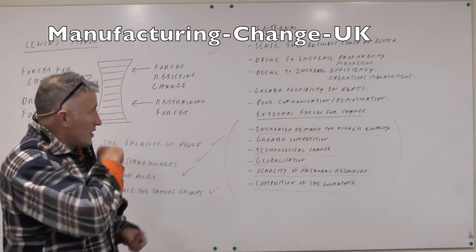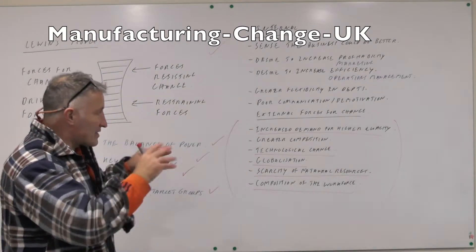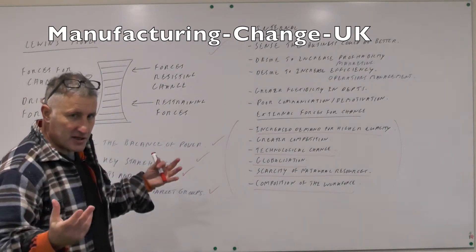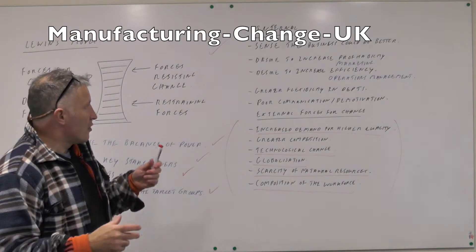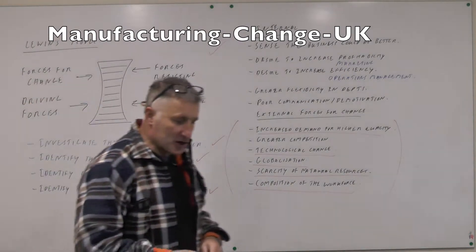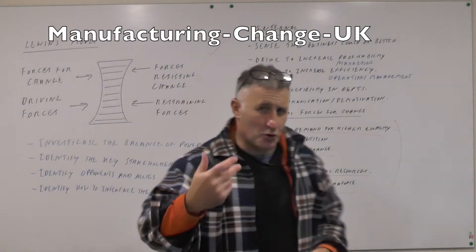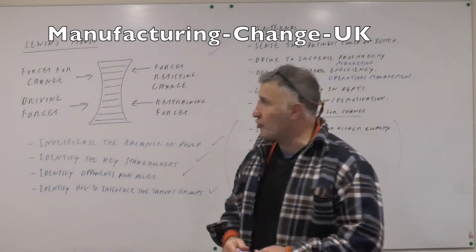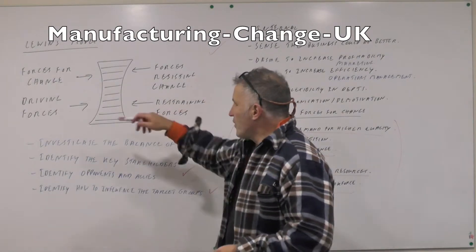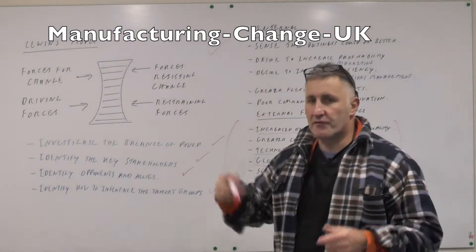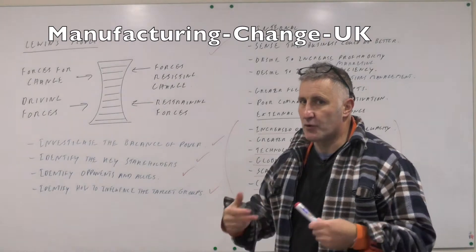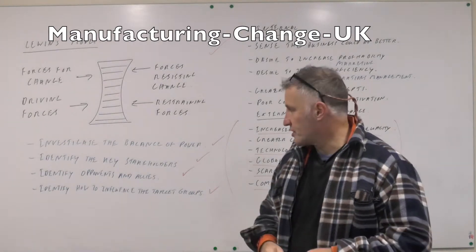These are all factors that firms will need to take into account — why they need to change. They use Lewin's model. It's a bit like a SWOT analysis on a firm: you sit down and you look at how your particular firm can change and how it's going to move forwards.